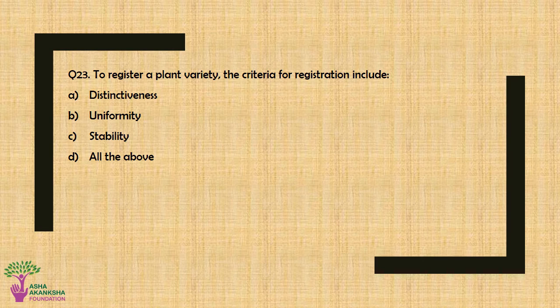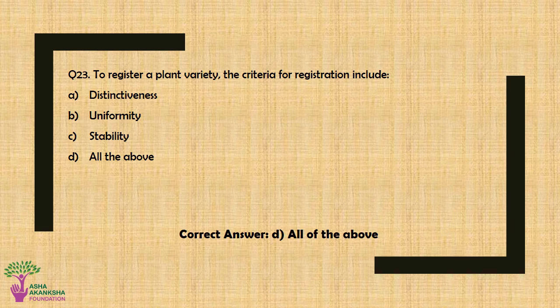Question No. 23: To register a plant variety, the criteria for registration includes — Option A: Distinctiveness, Option B: Uniformity, Option C: Stability, or Option D: All of the above. The correct answer is Option D — All of the above.